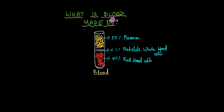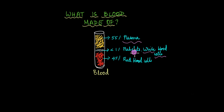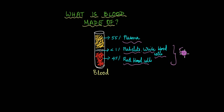In the previous video, we talked about the different components of blood. We spoke about plasma and we also spoke about white blood cells. In this video, we are going to focus on the other two major components of blood, which are red blood cells and platelets. The platelets, white blood cells, and red blood cells together are actually known as formed elements.